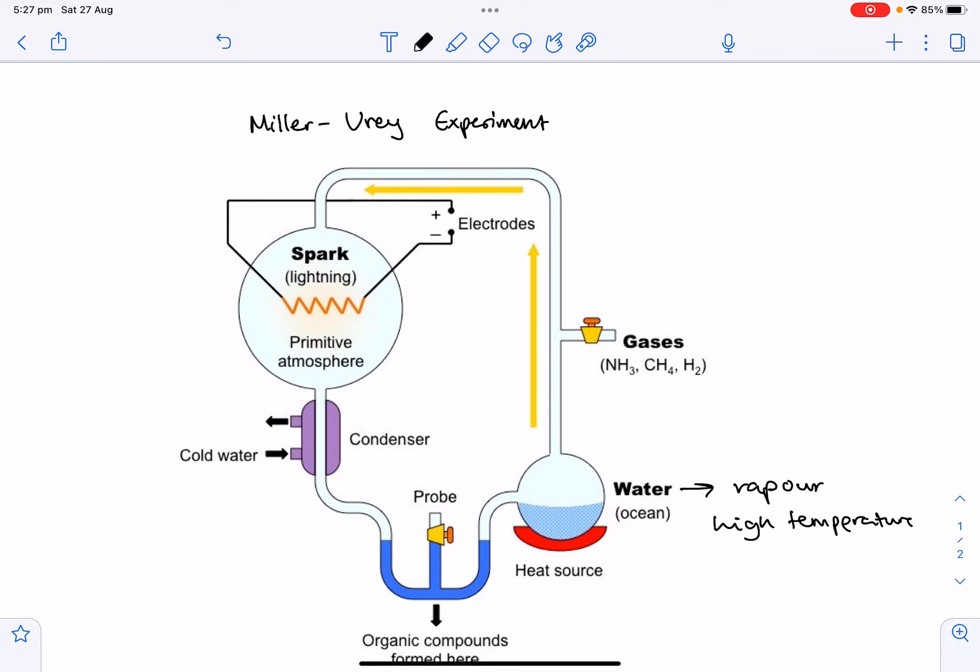The vapor was then mixed with a variety of gases, such as hydrogen gas, methane, ammonia, to create a reducing atmosphere.